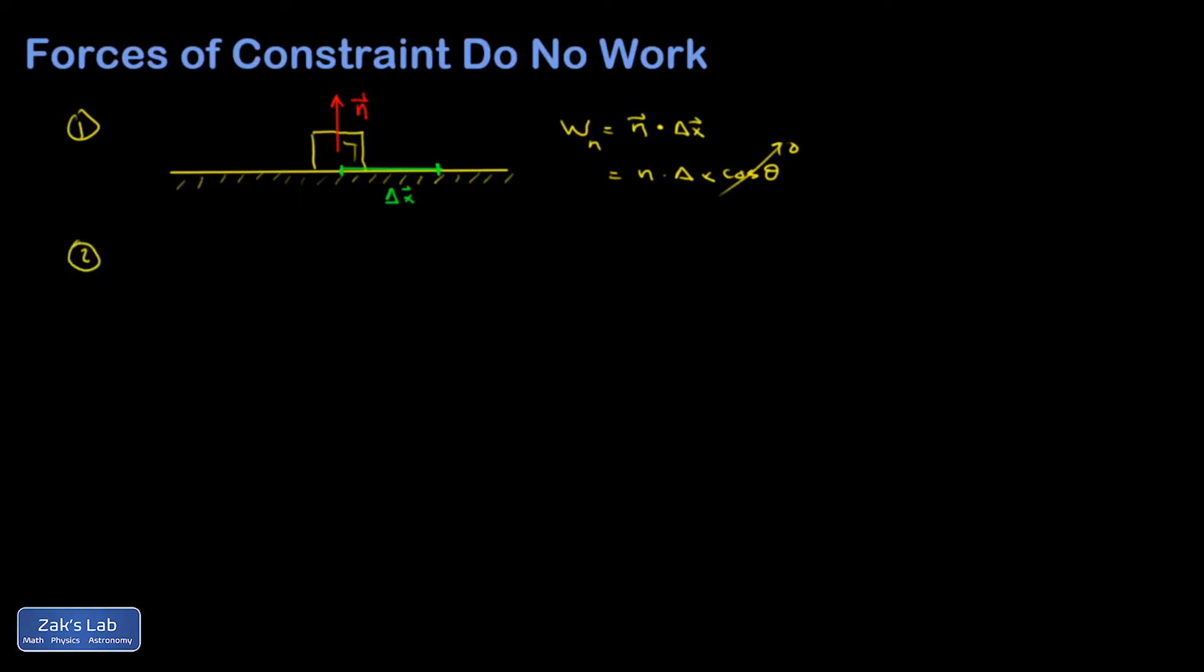Constraint forces are always perpendicular to the direction that something is moving. This could even be true on a crazy roller coaster. If I look at some moment on this roller coaster, the normal force is pushing perpendicular. Maybe now I would have to use a different symbol than X for my displacement, but it doesn't change the fact that the normal force is perpendicular to the displacement at that one moment in time.